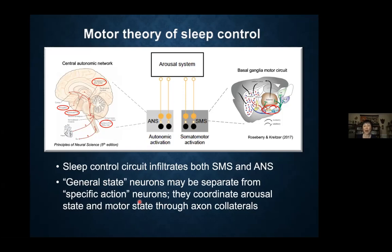There may be a separation between general state neurons and specific action neurons. In the SNR, the PV neurons might be action selection neurons — more specific — while the GAT2 neurons might be more like general state neurons. The general state neurons send axon collaterals to both the arousal system and motor control circuits so they can coordinate motor activity with the arousal state of the brain. Even though everything I told you is about how we sleep, I didn't mention a single word about why we sleep — but this view about how sleep is controlled might have important implications for that question.